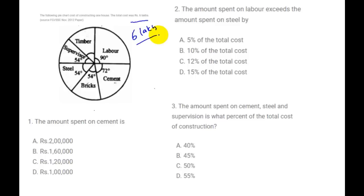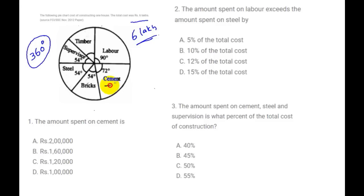First question: the amount spent on cement. As per degrees, the pie chart is like a circle with a total of 360 degrees. So we can identify the data here. Total is 360 degrees. The amount spent on cement — where is cement? Here we have 72 degrees. 360 degrees is equal to 6 lakhs.